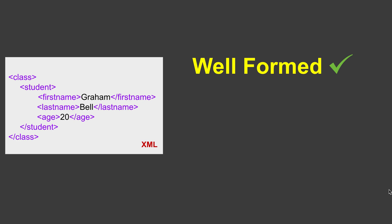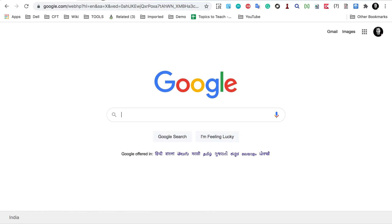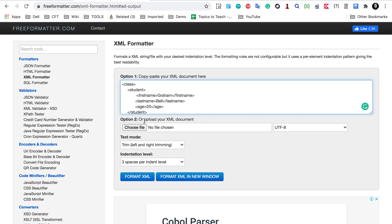An XML can be a well-formed XML. If an XML follows all the rules and syntax of an XML document — that it has proper structure, nesting, start and end tags — then we call it a well-formed XML. We have already seen in earlier sessions that you can use some online tools to validate your XML. For example, here we are on freeformatter.com where we have an XML formatter.